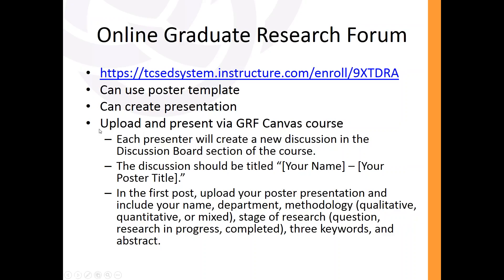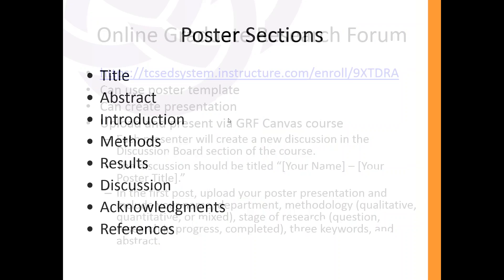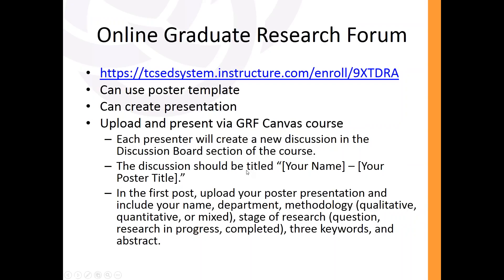For the online GRF, check the email sent by Ellen Grant on June 10th. It's all done through Canvas: create a new discussion board, title it with your name and poster title, then make a first post uploading your presentation. Include your name, department, methodology, stage of research, three keywords, and your abstract in that first post.